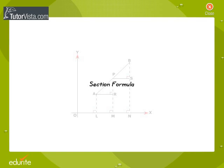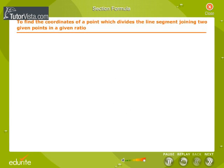Section Formula. To find the coordinates of a point which divides the line segment joining two given points in a given ratio.